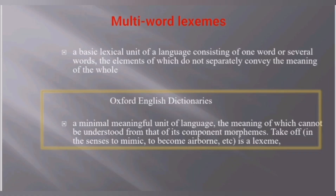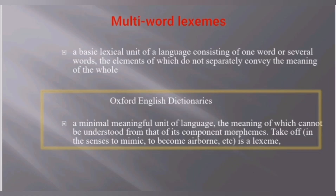A lexeme is a basic lexical unit of a language consisting of one word, or similar words whose elements do not separate from the meaning of the whole. When you join two different words, they can create a whole meaning together, whereas written separately they have their own individual root meanings. In the Oxford English Dictionaries, a lexeme is a minimal meaningful unit of language whose meaning cannot be understood from its component morphemes — for example, 'take off' in the sense of 'to mimic' or 'to become airborne.'